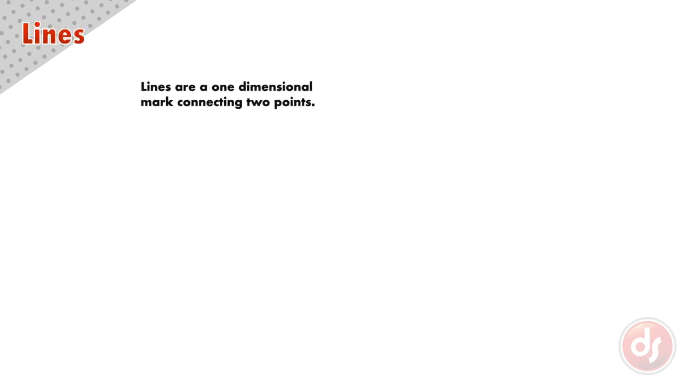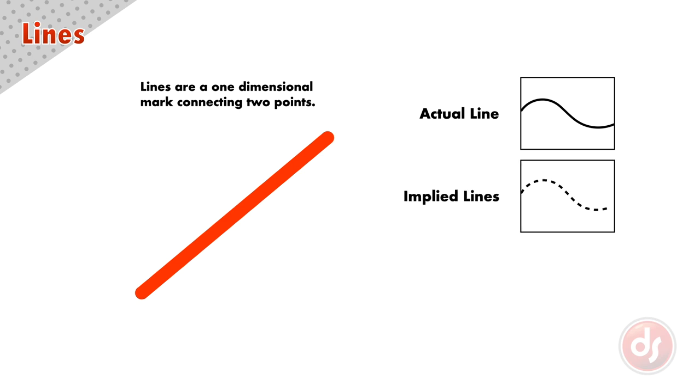Lines are an actual or implied one-dimensional mark connecting two points. Lines can be an actual linear mark, or implied lines by a sequence of marks the eye connects together. We will also read the edge of a shape as a line.